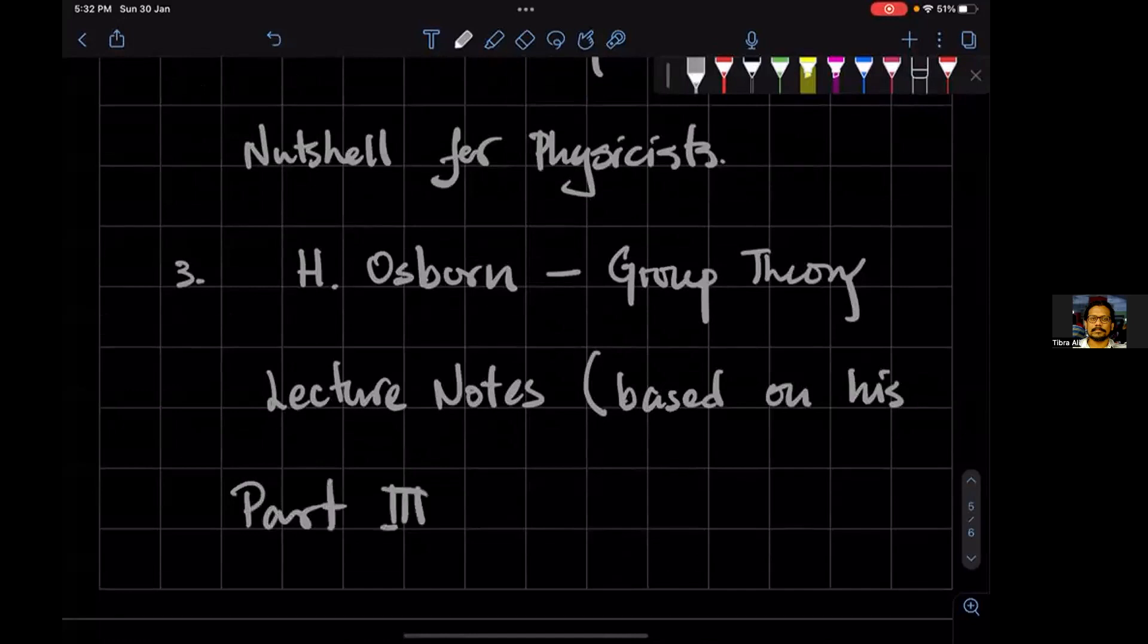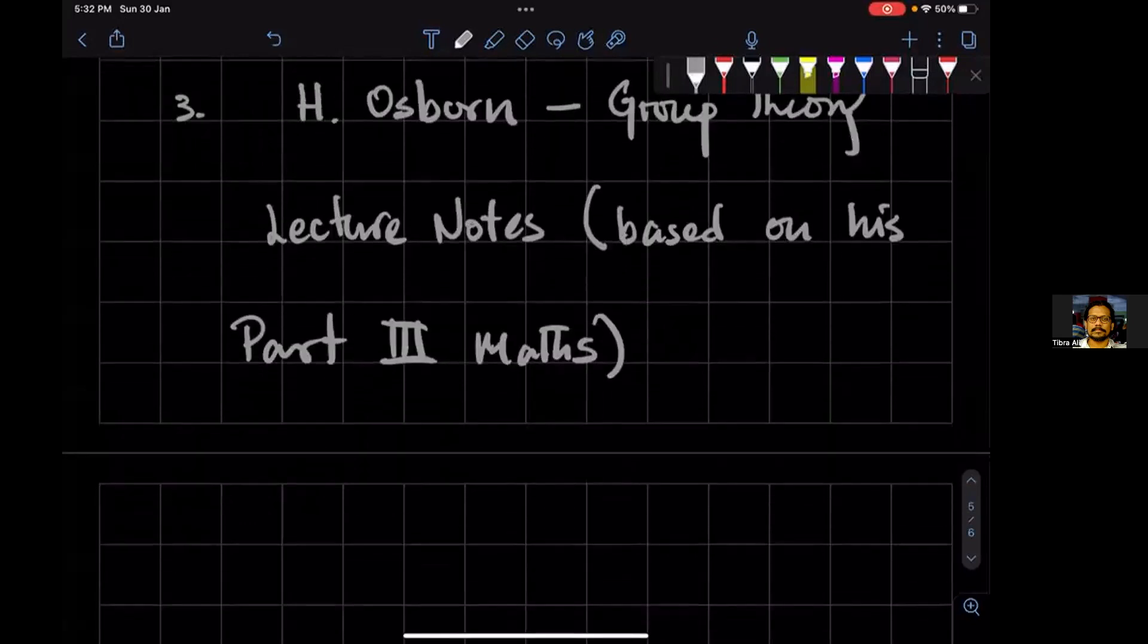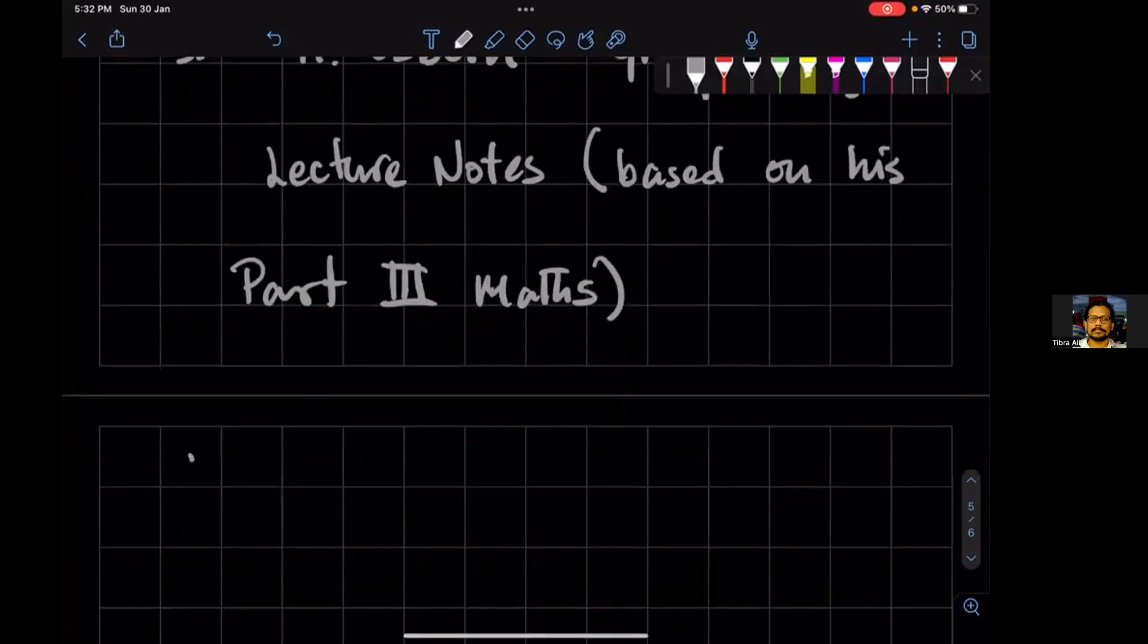Part Three Maths. Since it's Cambridge, they call it Part Three Maths. This is an S there. In North America, mathematics gets shortened to math. In England, it gets shortened to maths. That's the main difference between North America and the UK.